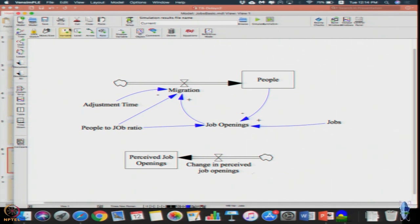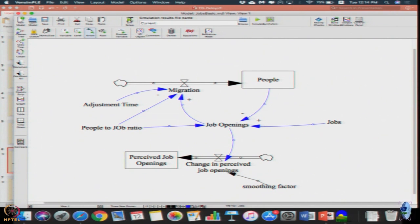This is change in perceived openings and then new information. Let us model smoothing to the actual value of job openings. Here the reported value or the actual value will be the job opening itself. Your current value will be the perceived job openings. Now instead of reacting to the job openings, migration reacts to perceived job openings. I'm going to click delete, then click this arrow, click perceived job openings which feeds into migration.